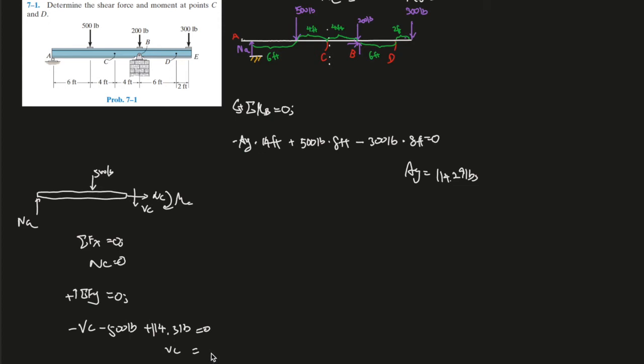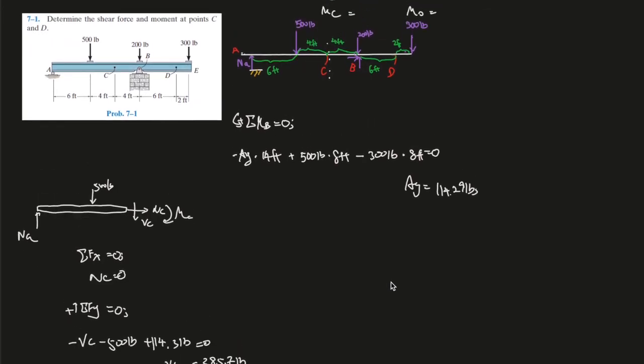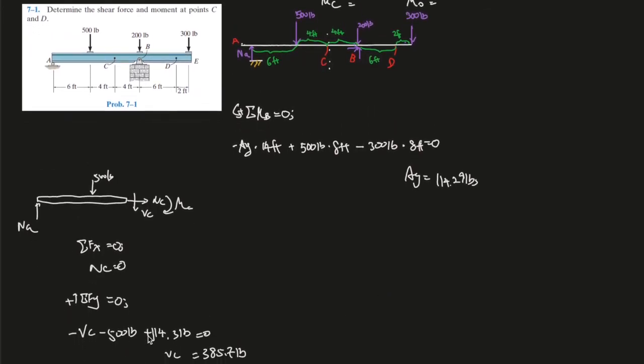Plug everything into the calculator. VC should give you 500 minus 114.3, should give you 385.7 pounds. This is VC. It equals negative, so it means VC is going back up.